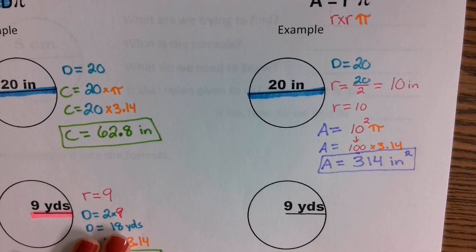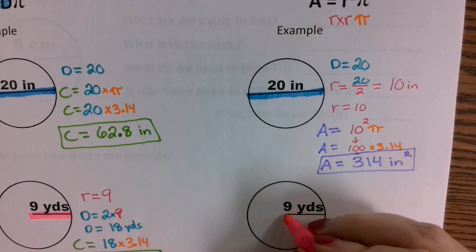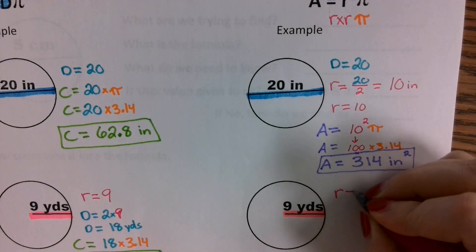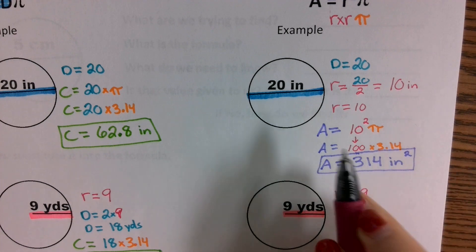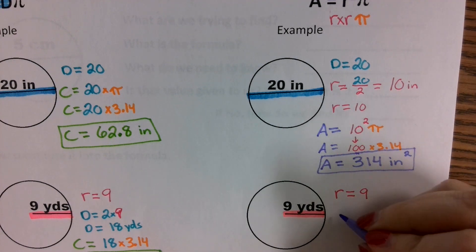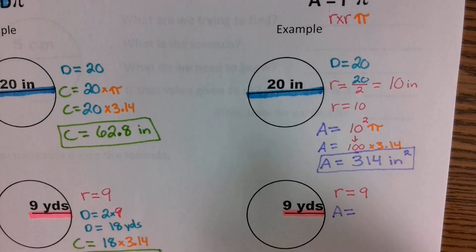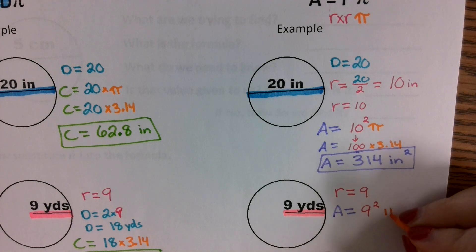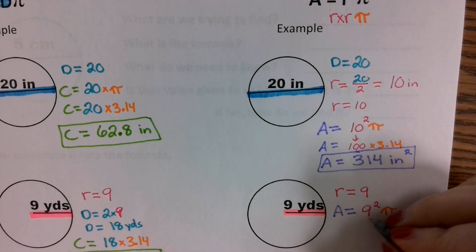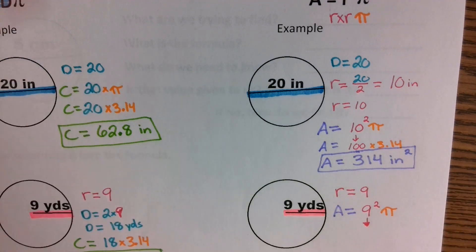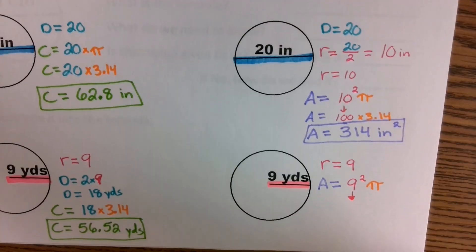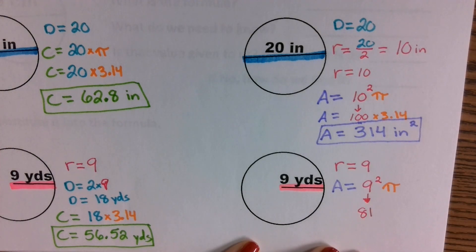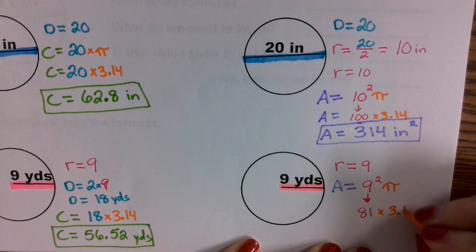For the second example, they gave us the radius already, so we already know the radius is equal to 9 yards. R is equal to 9. So we're just going to plug it into our formula — take the radius 9 and square it, then multiply that by pi. What is 9 squared, or 9 times 9? 81. 9 times 9 is 81. So we're going to do 81 times pi, which is 3.14.